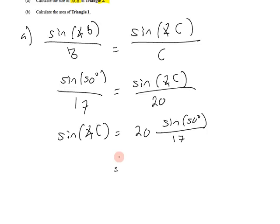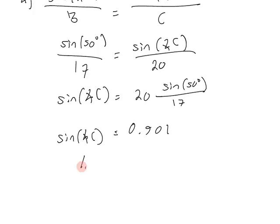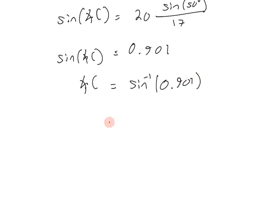50 degrees is not a major angle on the unit circle, so we'll have to plug that into the calculator to solve, making sure we're in degree mode. And when you do that, you'll find that the sine of angle C should be equal to 0.901. To get angle C, we'll take the inverse trigonometric function. Once again, that's not a major length on the unit circle, so we'll have to turn to the calculator, making sure we're in degree mode. And we'll get 64.3 degrees for angle C.